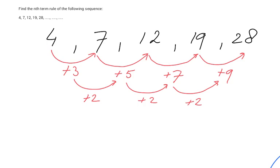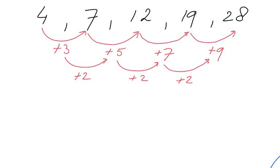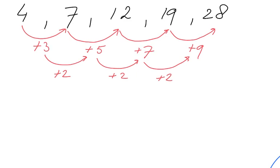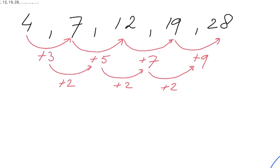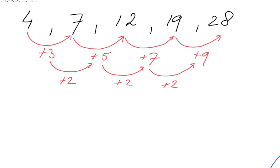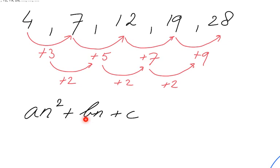Considering that it took us 2 rows to get a constant term-to-term rule, our nth term rule is going to look like a quadratic expression. So it's going to be of the format a times n squared, plus bn, plus c. Because we needed 2 rows, it's going to be a quadratic expression. The question is: what are the values of a, b, and c? And we are going to find that out now.